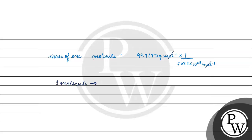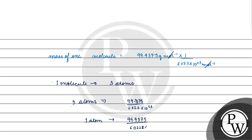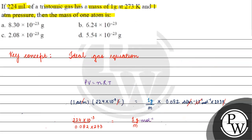In one molecule, how many atoms? Three atoms — because it's triatomic. So for three atoms, the mass will be 99.9375 divided by 6.022×10²³. For one atom, mass of one atom equals 99.9375 divided by 6.022×10²³ into 3, which comes out to be 5.54×10⁻²³ gram. Coming back to the question, the correct answer is Option D. I hope you understood it well. Thank you and all the best.